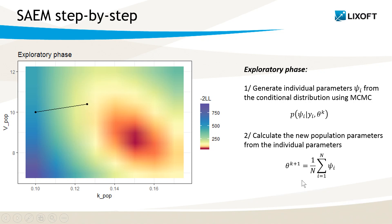Then I start again for the next iteration. I generate new individual parameters and I average them to get the population parameters for the next iteration. So that's how I get from one iteration to the next one.